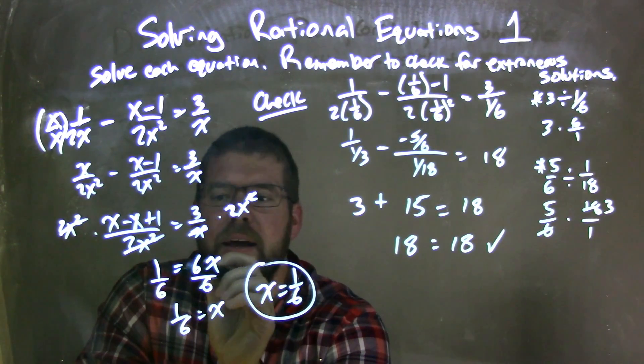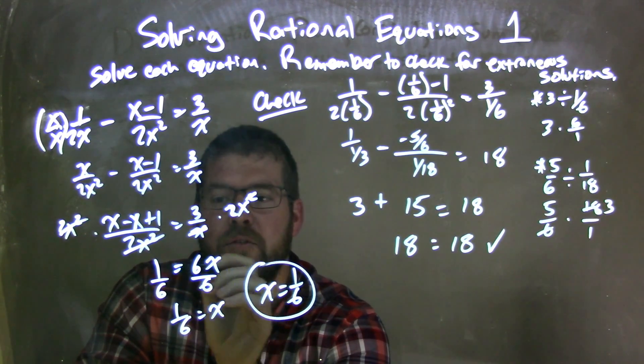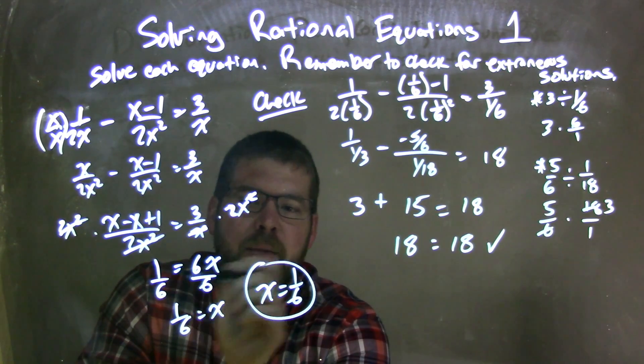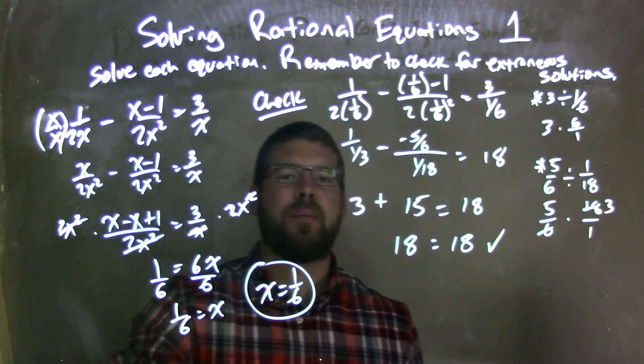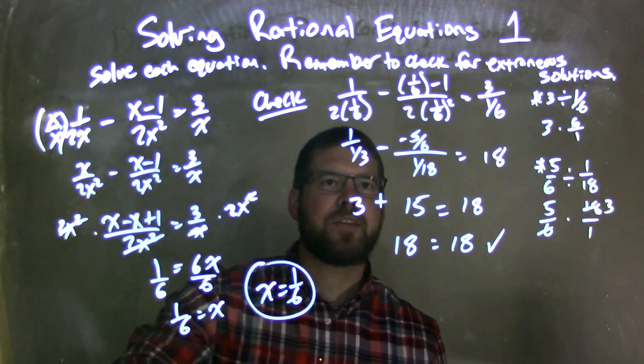Multiply both sides by 2x squared, giving me 1 equals 6x. Then I divided by 6 on both sides, giving me x by itself, and my final answer being x equals 1 sixth.